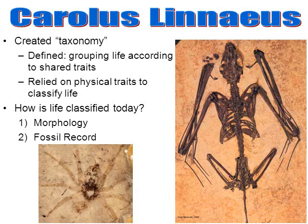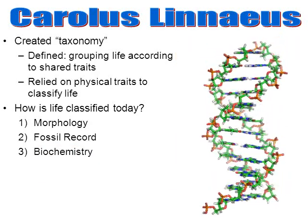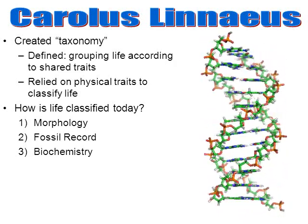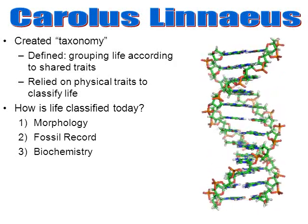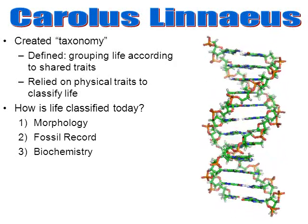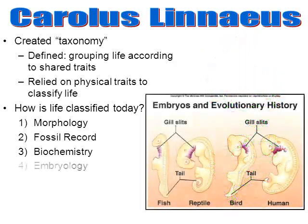We also can gather information from the fossil record. The fossil on the right is a bat, and the fossil on the left is a spider, and you'll see the spider fossil again a little bit later. We also classify life today using biochemistry — this area has led to some of the biggest breakthroughs. We compare DNA, RNA, amino acids, chromosomes, and proteins. We also use the study of embryology, the study of how embryos develop, to give us a sense of how to group life according to their shared traits.